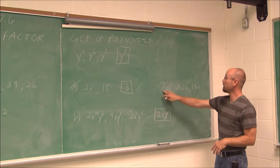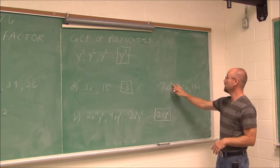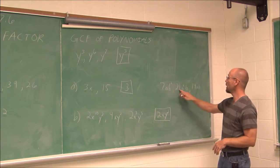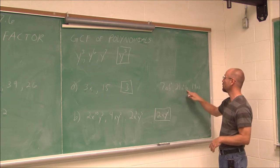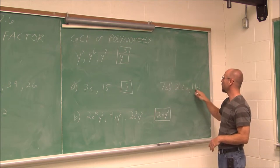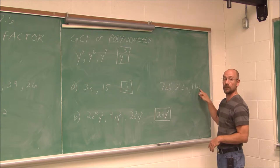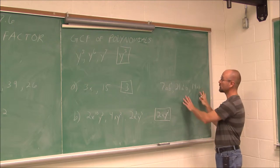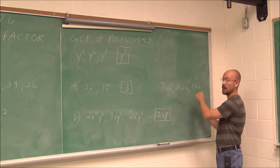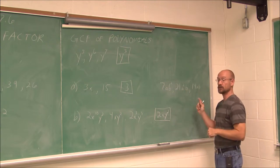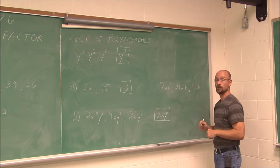This one here — we have 7ab squared, 21a squared b, and 14ab. I want you to try this one on your own and find the greatest common factor of these three terms.